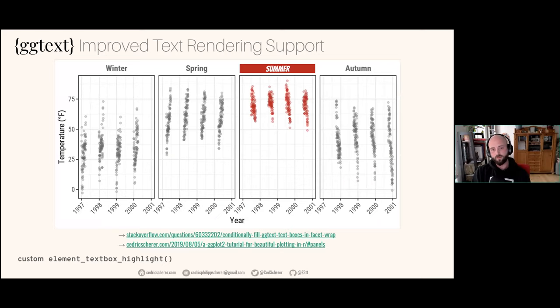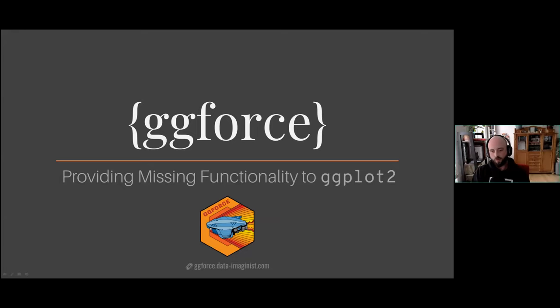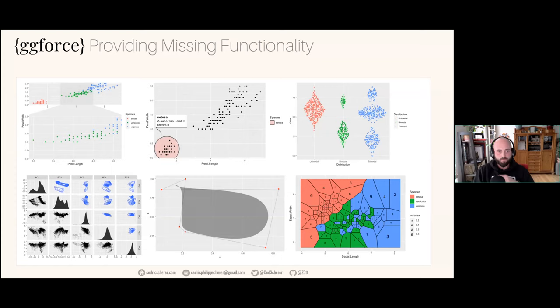You can also do custom element_textbox highlighting — adapted from a Stack Overflow answer from Claus — to highlight or change, for example, specific facet names. ggforce is a large toolbox of many great things that adds missing functionality to ggplot2. It's developed by Thomas Lin Pedersen. Just a few examples of many things you can do with it — including a zoom facet to zoom in on plots, sina plots to show raw data distributions, and Bézier diagrams among others.